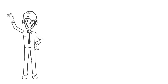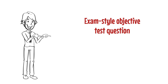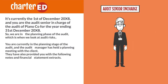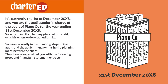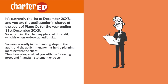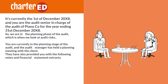Welcome back folks. Today we shall be attempting an exam style objective test question. Let's not waste any time and get straight into it. It's currently the 1st of December 20X8 and you are the audit senior in charge of the audit of Piano Co for the year ending 31st December 20X8. You are currently in the planning stage of the audit, and the audit manager has held a planning meeting with the client.